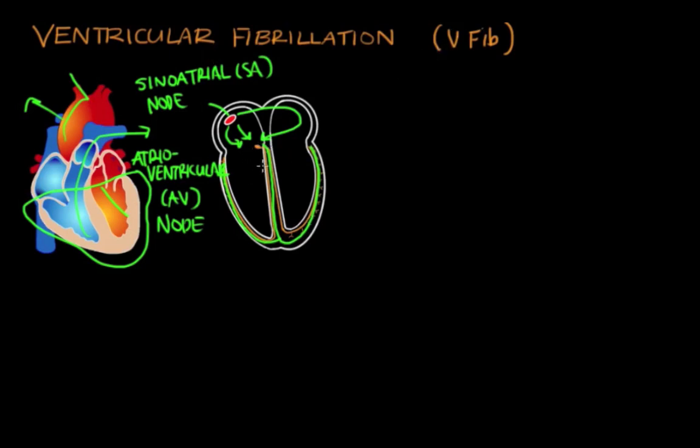Now in V-fib, the signal in the ventricles is no longer coordinated. This might be because you have some sort of severe oxygen deprivation or because you have some sort of abnormality in conduction. But for whatever reason, you lose coordinated signaling in the ventricles. Instead, you have this rapid, random, and chaotic signaling.